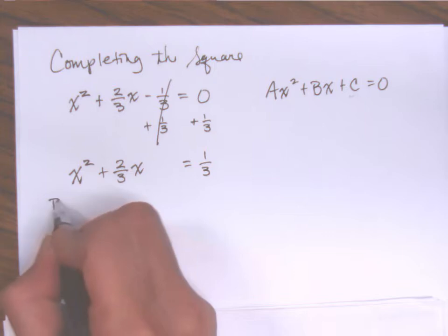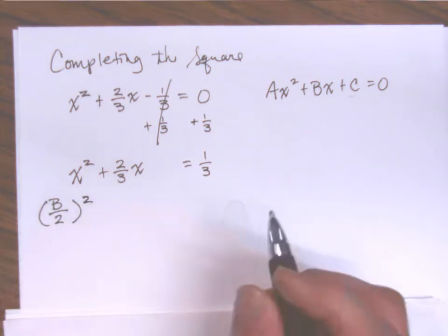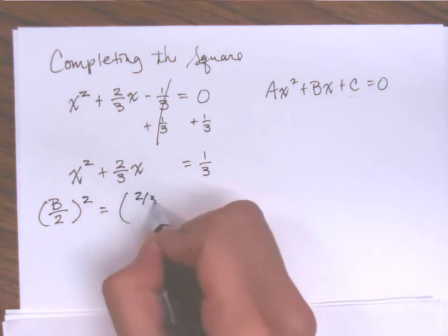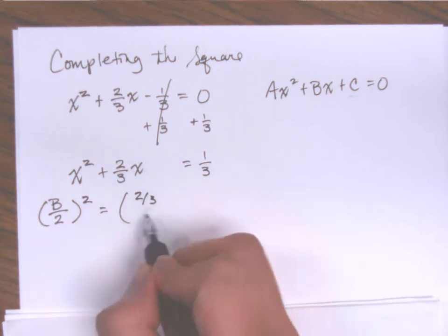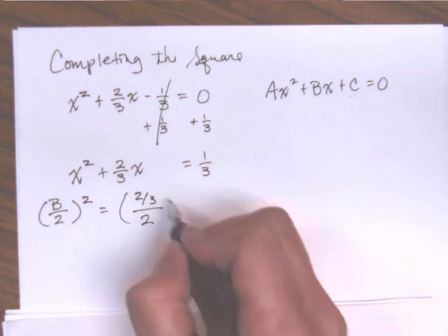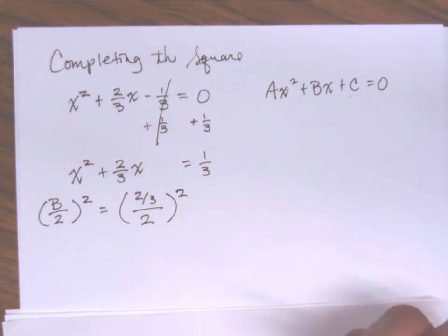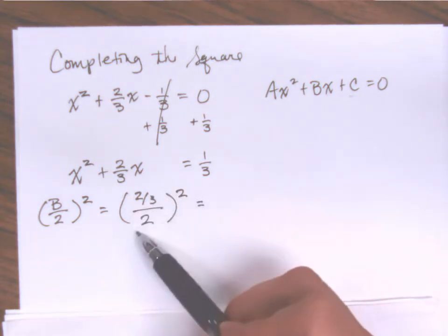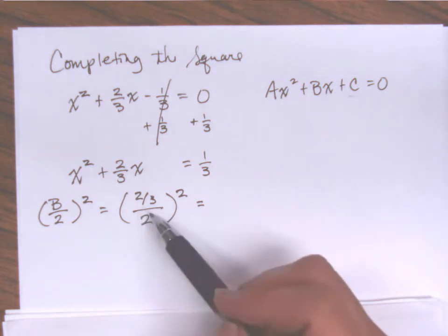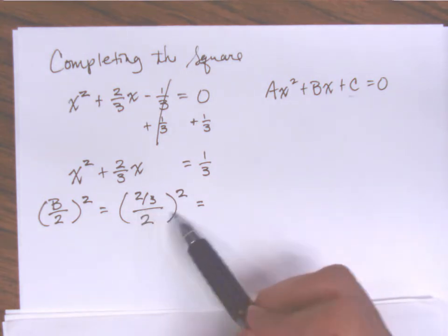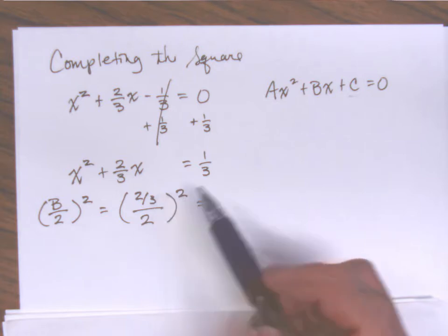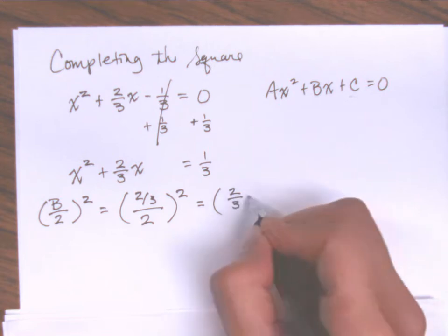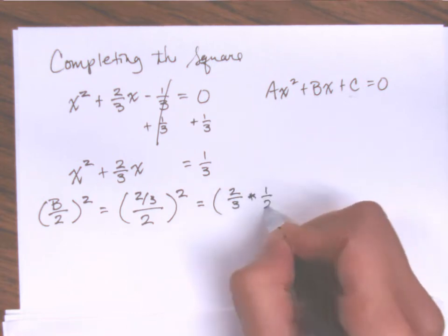Remember, I am looking for b divided by two, squared. Here b is two-thirds — that's not a problem. We're going to take two-thirds, divide it by two, and then square it. When you're working with fractions inside of fractions, we resolve this by taking the reciprocal of the bottom and multiplying it back to the top. So what I'm really looking at in my parentheses is two-thirds times one-half, all squared.